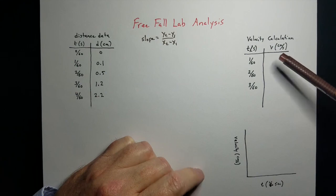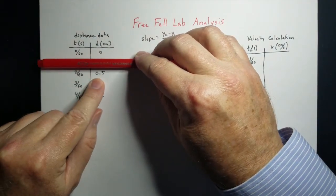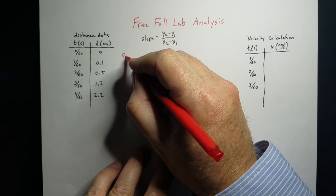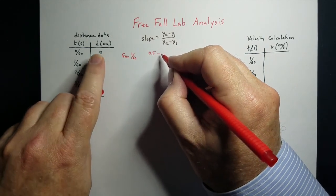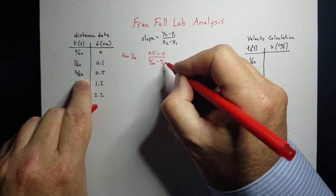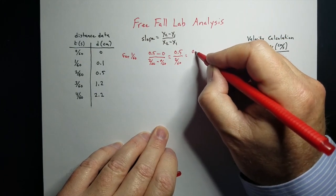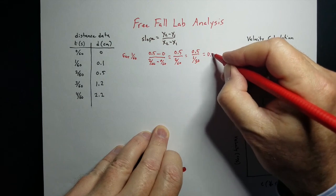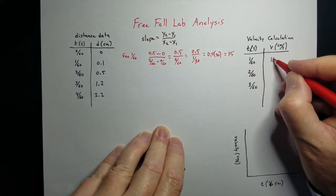To find the velocity at 1/60th of a second, cover up that data point and use the point after and the point before as the two points in the slope formula. So for 1/60th, I take the point after (0.5) minus the point before (0), over 2/60ths minus 0/60. That gives 0.5 over 2/60ths, which reduces to 1/30. Flipping the fraction, that becomes 0.5 times 30, which is 15. So the velocity at 1/60th of a second is 15 centimeters per second.